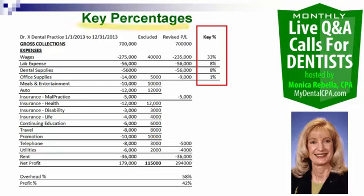Slide five shows how this relates to key percentages — what you should be looking at. In a red box, we've got key percentages: wages, lab, dental supplies, and office supplies. These are the four areas where you can really make a difference based on your gross collections. For Dr. X, even after adjusting for the clouding items, wages are at 33%, lab at 8%, supplies at 8%, and office expenses at 1%. Those are where he currently stands.